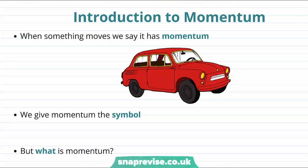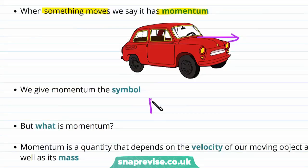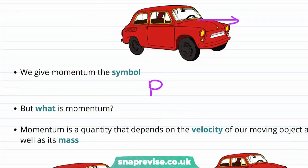Now you may have heard the word momentum being used in day-to-day life. In physics we say that when something moves it has momentum. So here if this car is moving then it will have momentum. And we give the momentum the symbol P. This is all very well, but what actually is momentum?